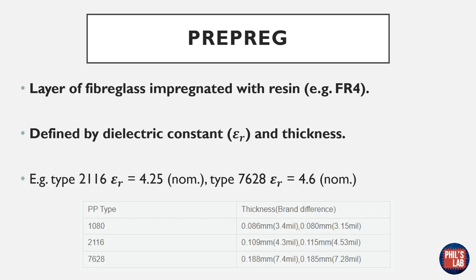As we saw previously, we have copper, prepreg, and core layers in our PCB build-up. Prepreg is a type of dielectric material — essentially a layer of fiberglass impregnated with resin, for example FR4. The main defining factors of prepreg are the dielectric constant (or relative permittivity) and its thickness. There are many different types of prepregs such as 1080, 2116, and others, with different available thicknesses and different dielectric constants. For example, 2116 might be 4.25, and type 7628 might be 4.6.